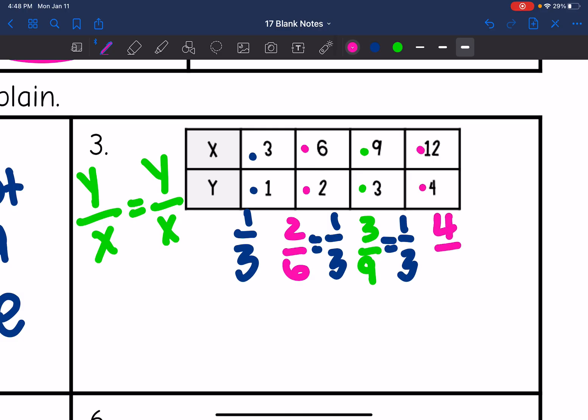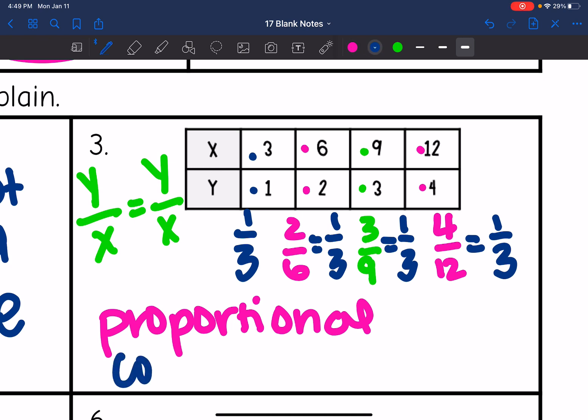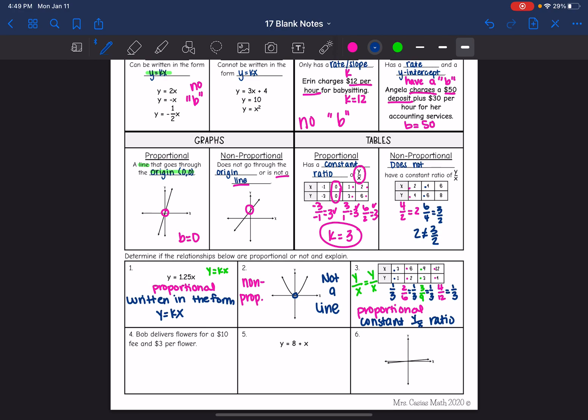And then the last one is 4 divided by 12. And 4 over 12, I can take a 4 out of both of those and get 1 over 3. So this one is proportional because it has a constant y over x ratio.